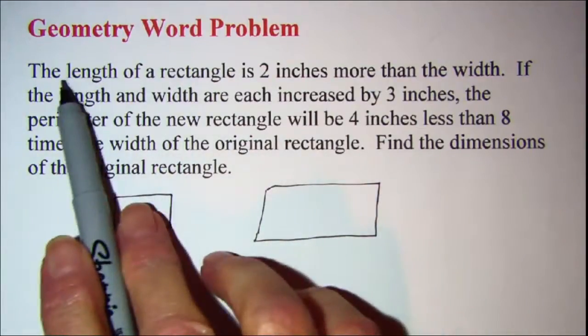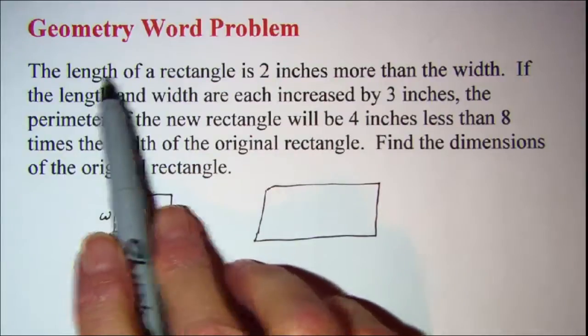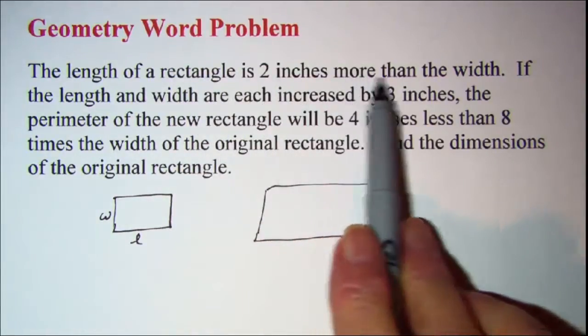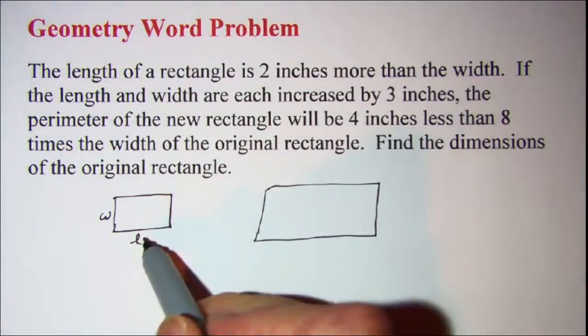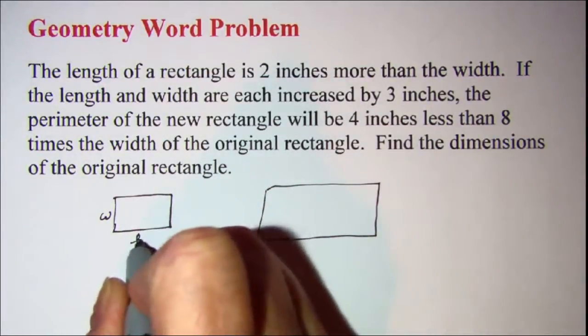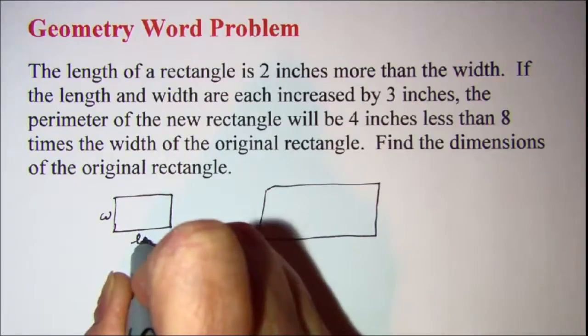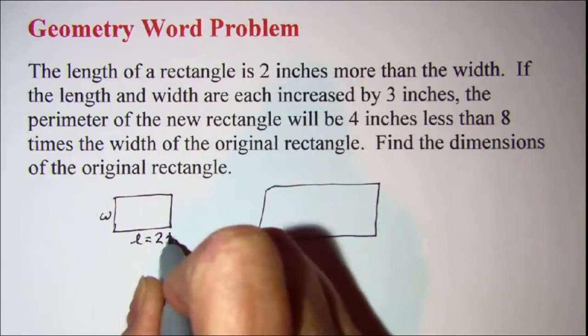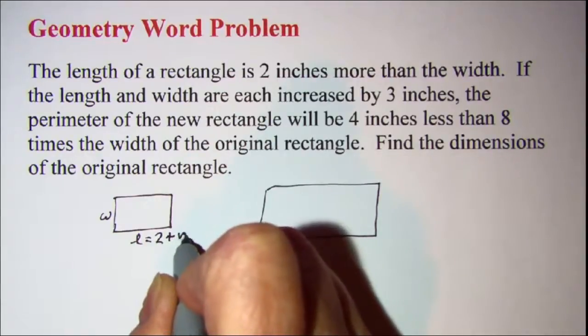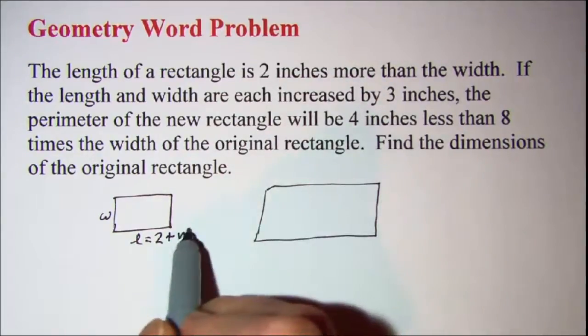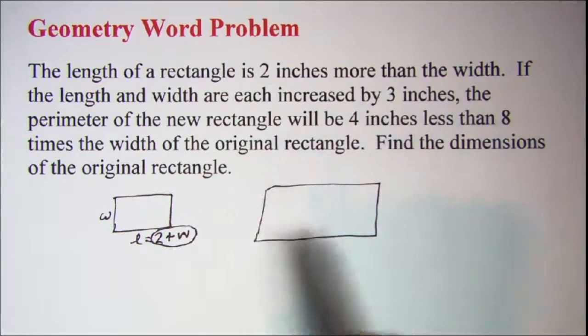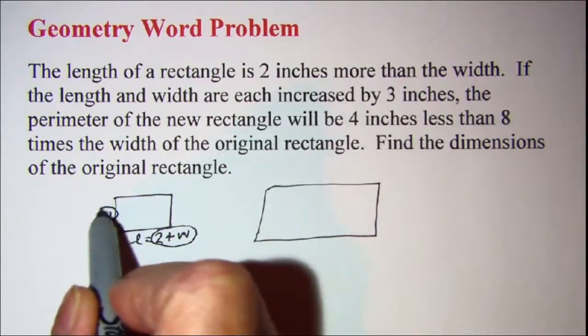Now the first sentence says that the length of the rectangle is 2 inches more than the width. So I know then that I can translate this: the length is 2 more than the width. So now I can use this dimension for my length and this dimension for my width.